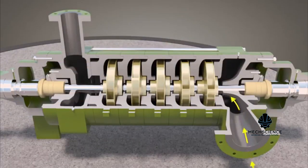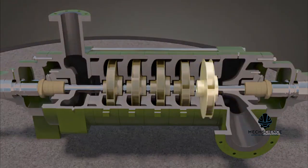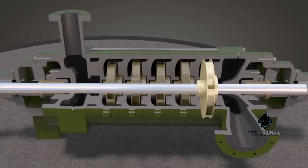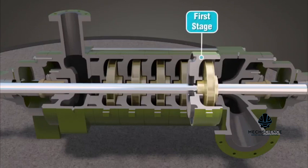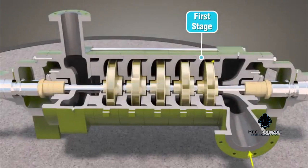The suction port directs fluid to the first impeller. One impeller for each stage is attached to the shaft. Each impeller fits into a volute chamber in the casing. A stage is composed of a rotating impeller and a stationary volute in the casing chamber.